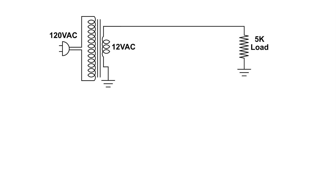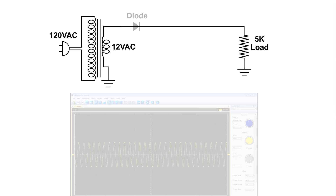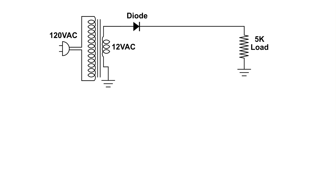On the left is a transformer that produces 12 volts AC at the secondary, and it is connected to a 5k load resistor on the right. I'm going to be using an oscilloscope to look directly across the load. This is what that 12 volts AC looks like.